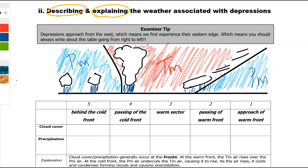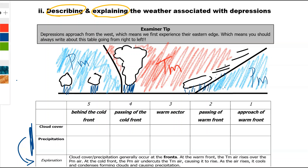The second aspect of weather we're going to look at is cloud cover and precipitation. We can take those together because the explanation covers both. Again, starting over on the right-hand side at the approach of the warm front, the first thing you get is cirrus cloud.